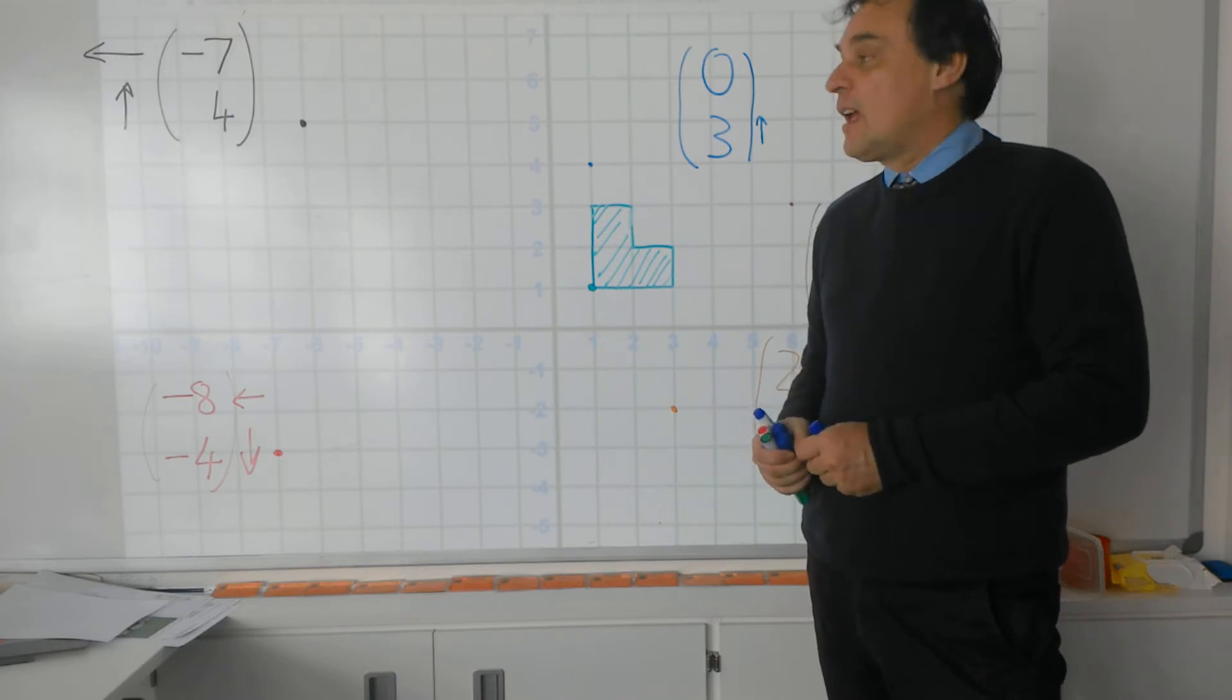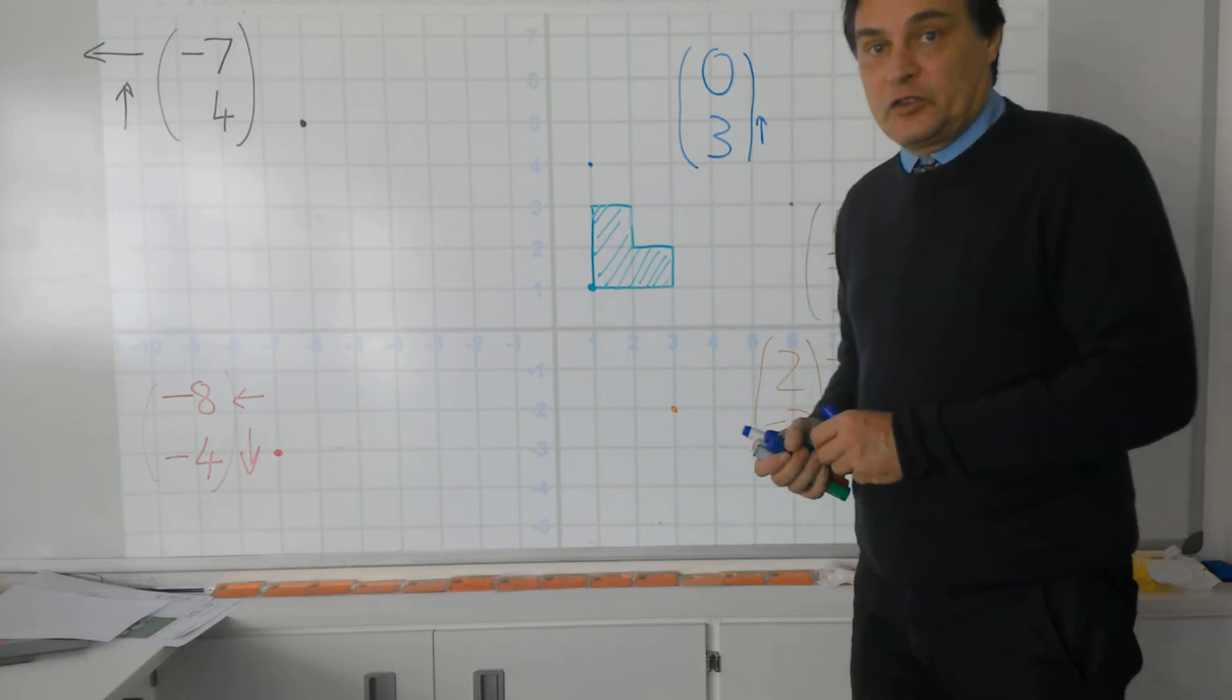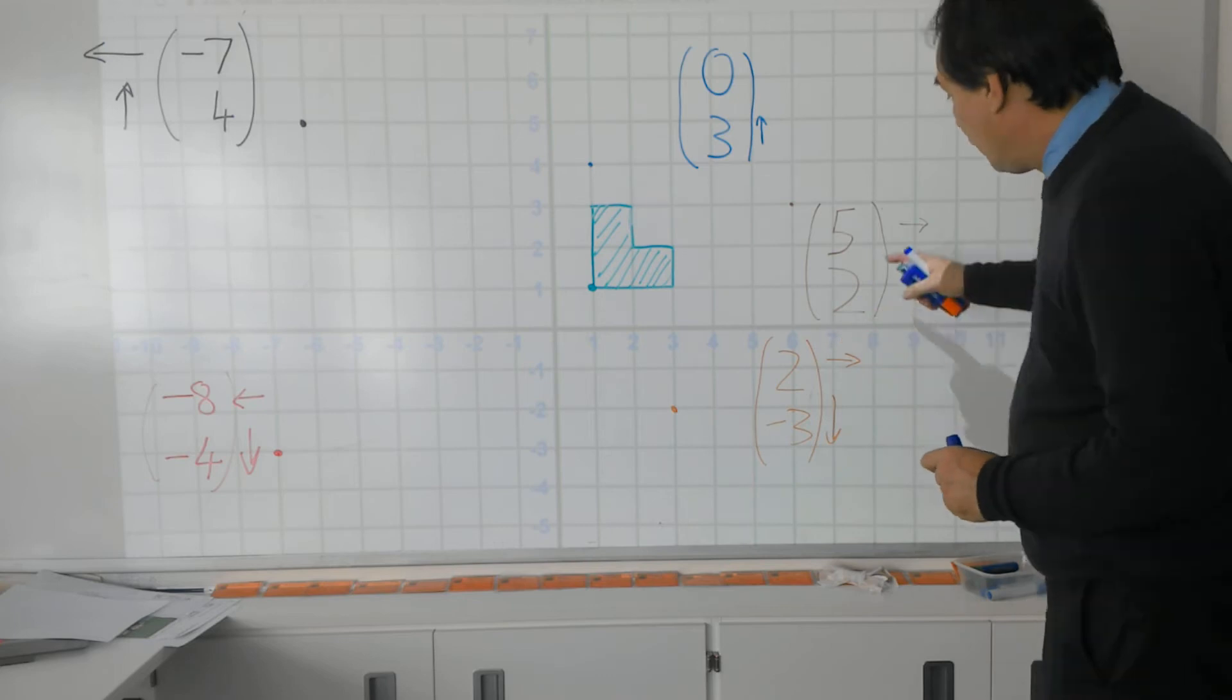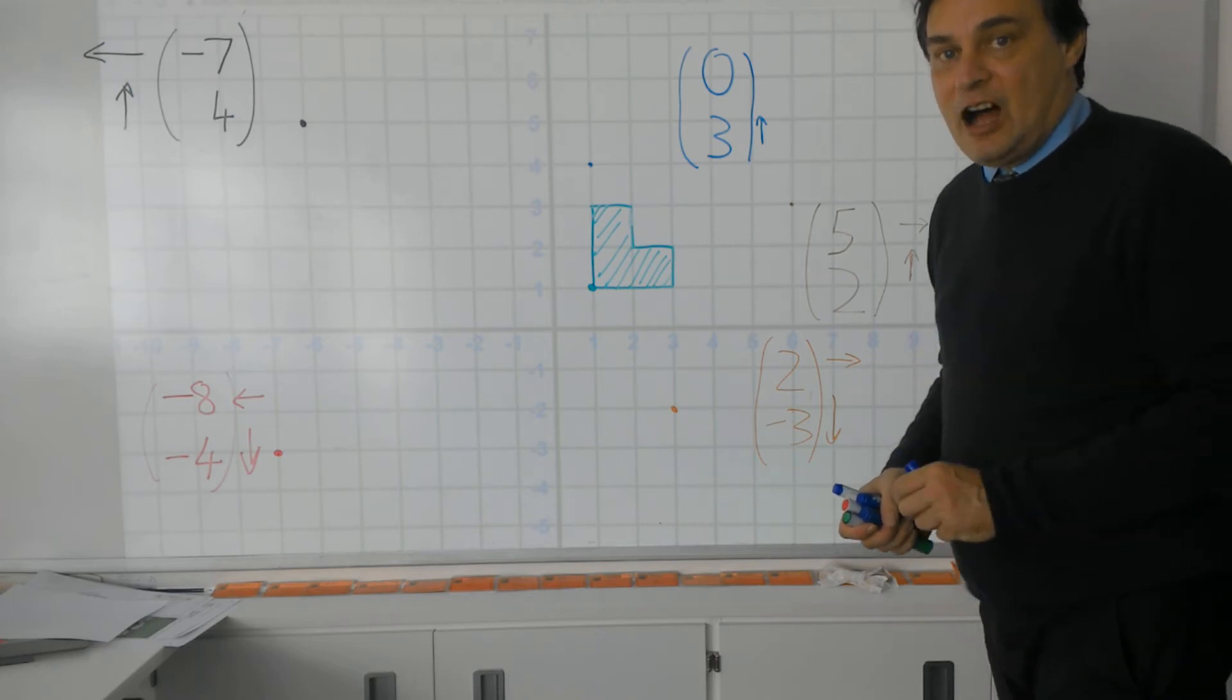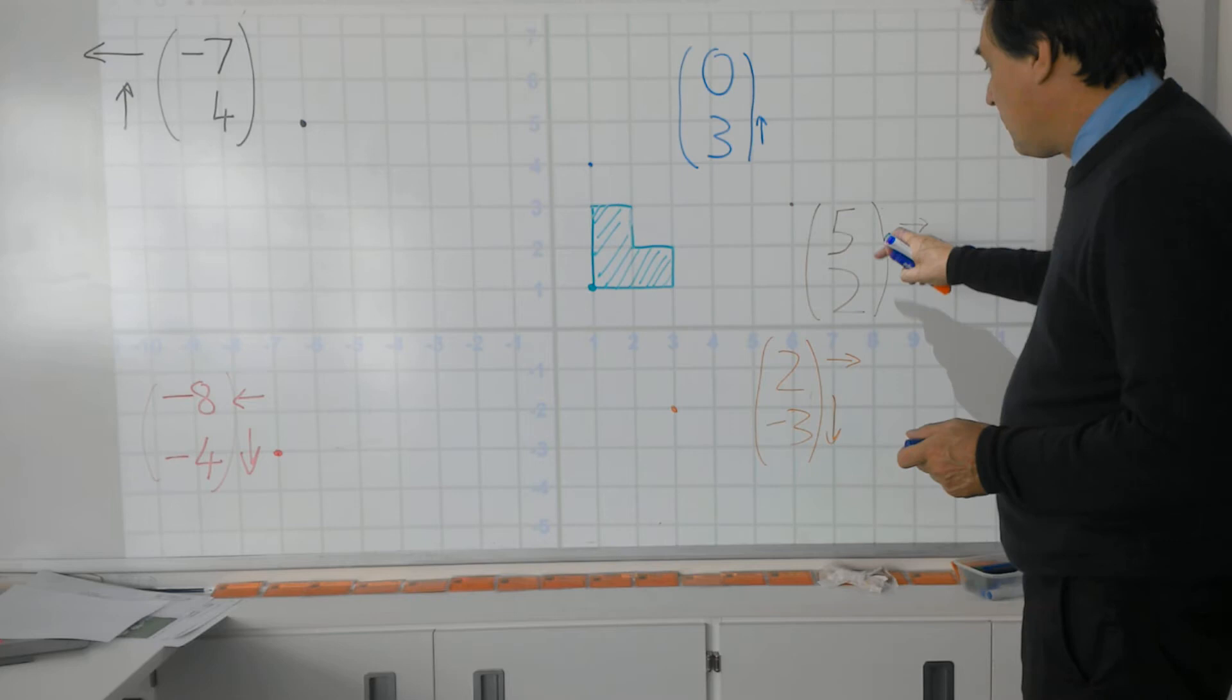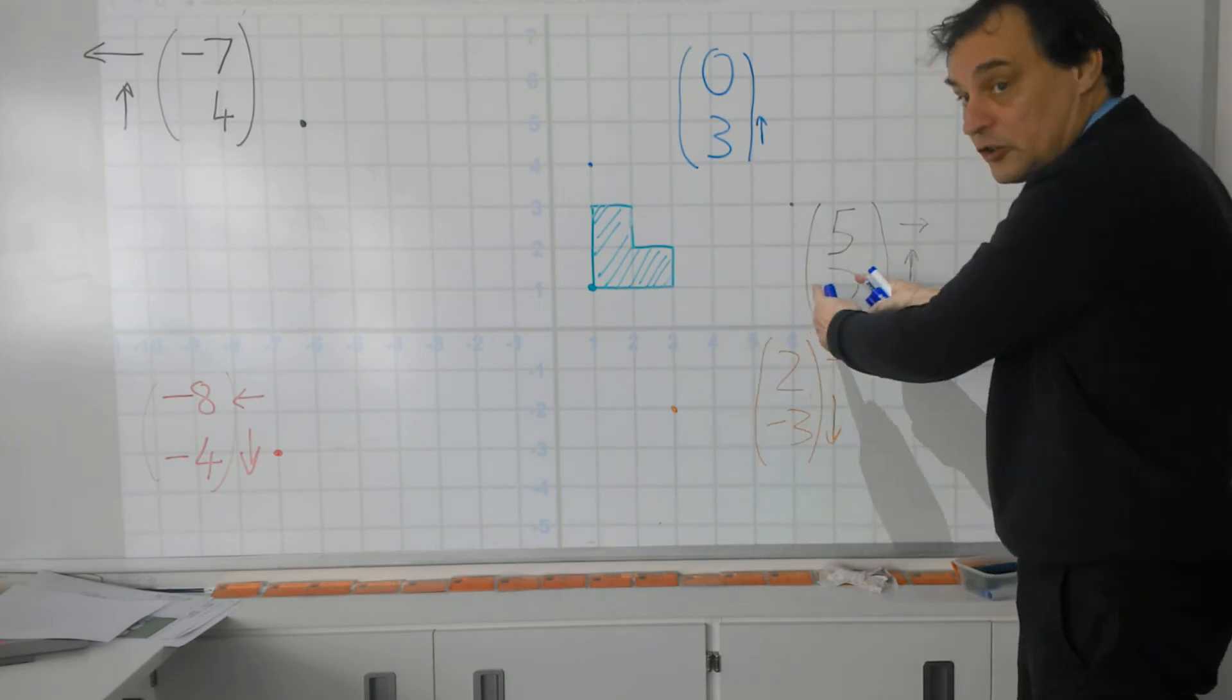Now to do this we use what's called a translation vector. This is a column of two numbers and they indicate how far along we're going to move the shape and how far up or down we're going to move the shape. So if I'm looking at my brown column vector here of 5, 2, it means I'm going to move this 5 along this green L and then 2 up.